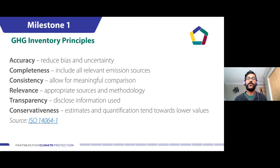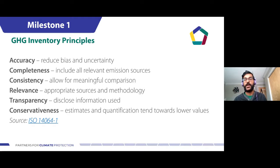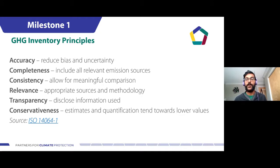Something to consider in all this work around emissions inventory are six basic principles. There's accuracy — reducing uncertainty in what we're collecting; completeness — making sure we're painting the whole picture; consistency — being able to compare against things meaningfully; relevancy — using appropriate sources and methodologies; transparency — documenting what we're doing; and conservativeness — trying to estimate things on the lower end of values. These principles are outlined in the international standard for GHG accounting and reporting, ISO 14064, and we want to keep these at the top of our minds to ensure true and fair accounting and reporting of emissions.